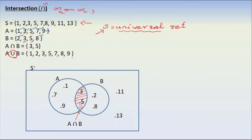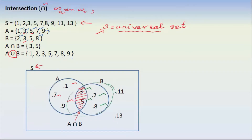If you want to see the universal set, the universal set is S. The first one is E and the second one is B. The E set is S: 1, 3, 5, 7, 9. And 2, 3, 5, 8.